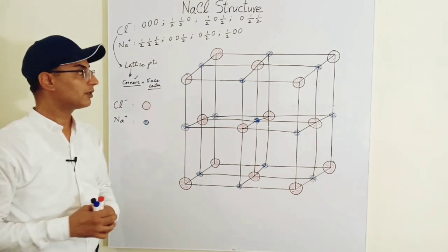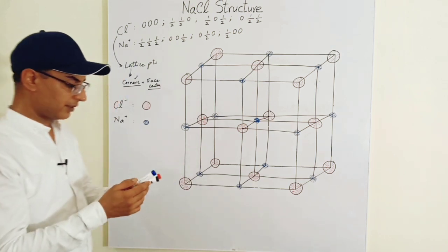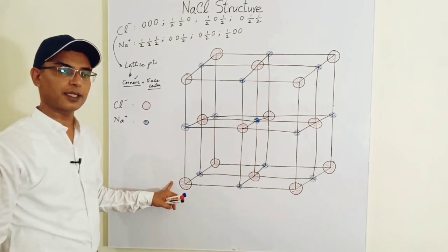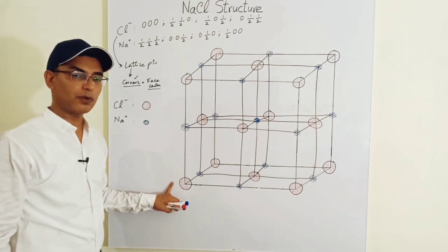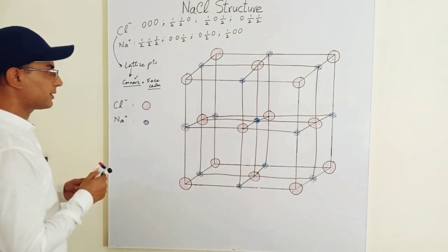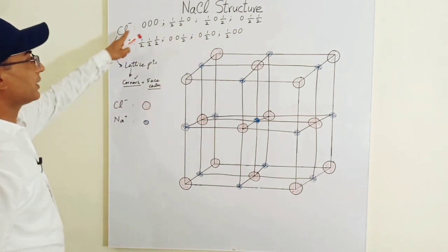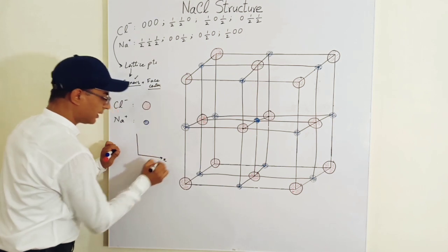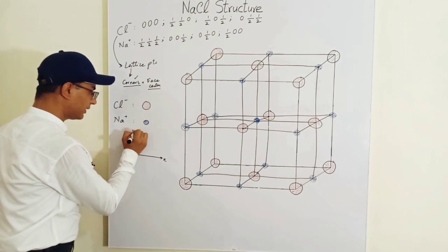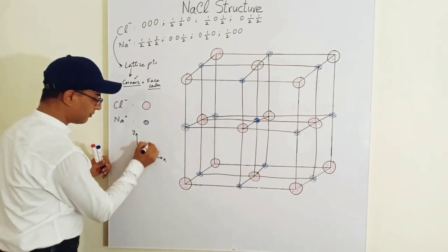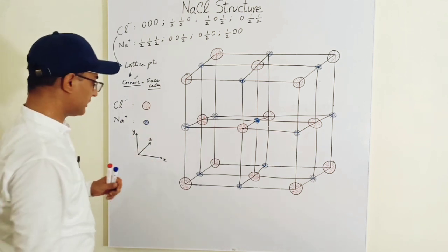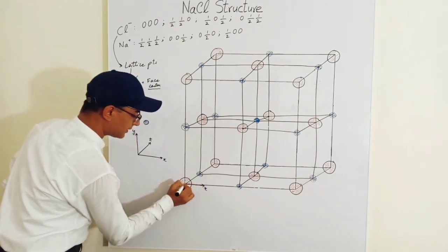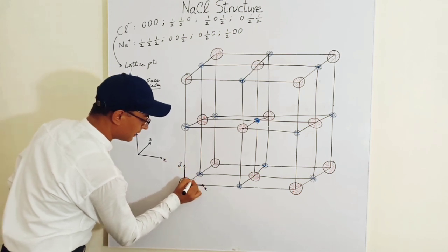You get the positions of the chlorine and sodium ions in the sodium chloride crystal structure. This is a crystal structure because it is now made up of atoms, not a lattice structure anymore — a lattice structure is made up only of lattice points. The next step is to verify these chlorine ion positions using a coordinate system, with the horizontal axis as x, the vertical axis as y, and z pointing inward perpendicular to both.